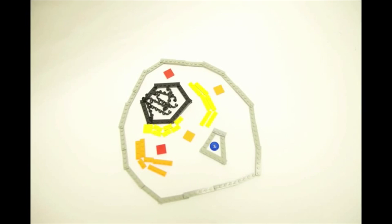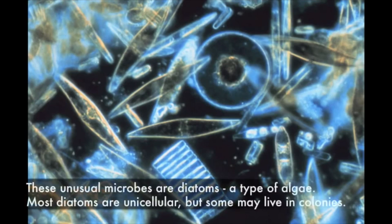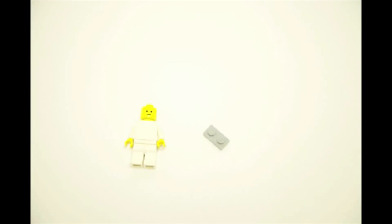In fact, multicellular organisms, like animals and plants, are made up of trillions of eukaryotic cells, although there are still plenty of single-celled eukaryotes out there just doing their thing.